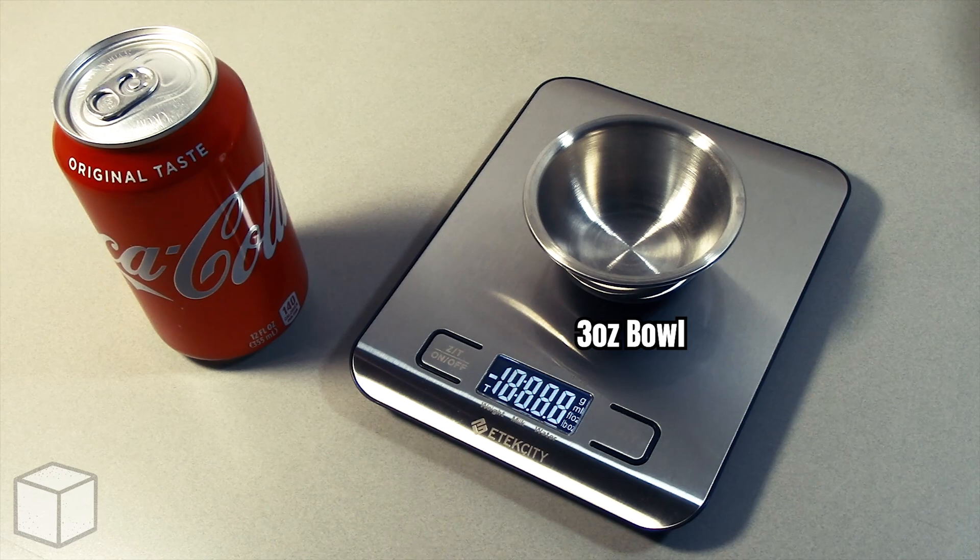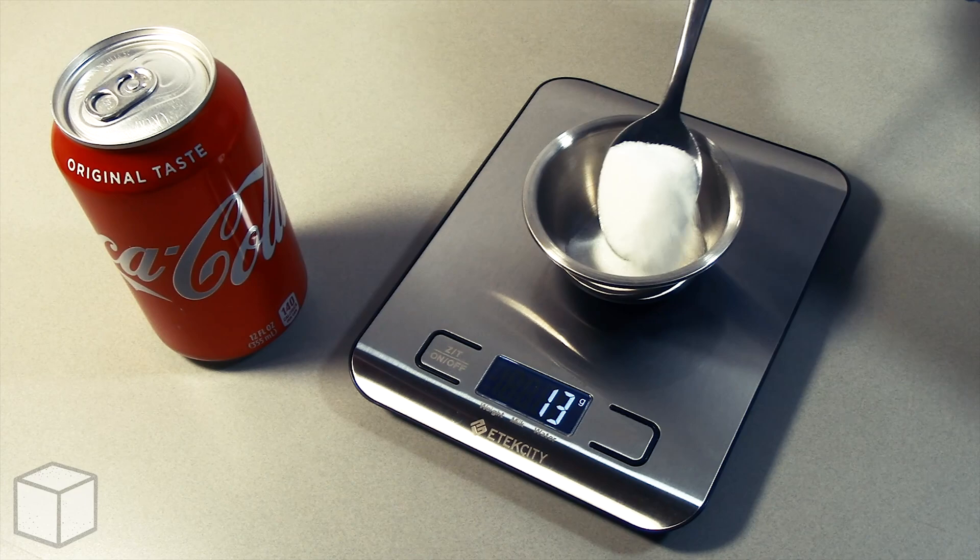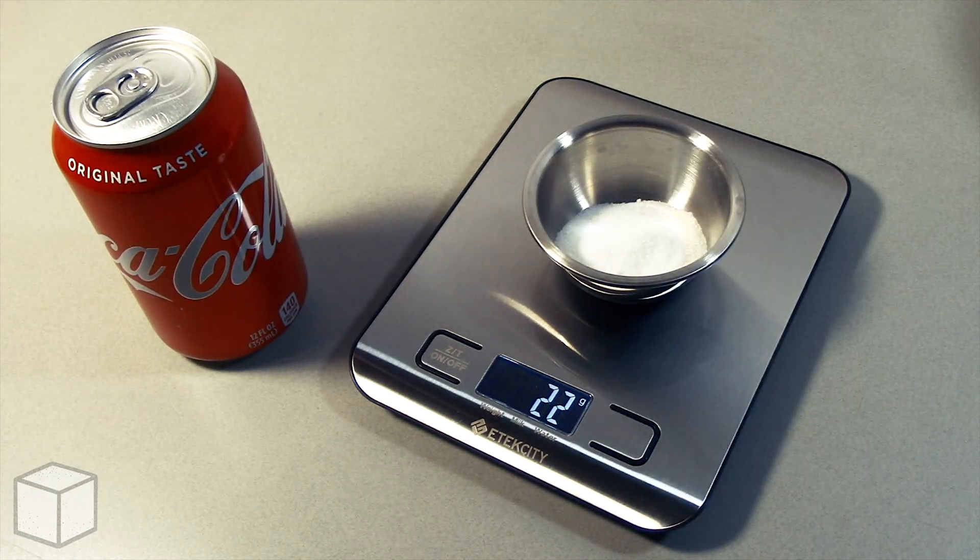To provide a visual of what that looks like, with this food scale I'm going to add granulated sugar into this small 3-ounce bowl until the total amount is equal to 39 grams.